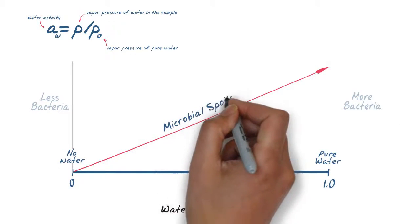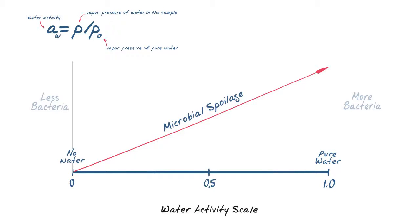Unbound water will exert vapor pressure which can be used to determine microbial spoilage, chemical, and physical stability.